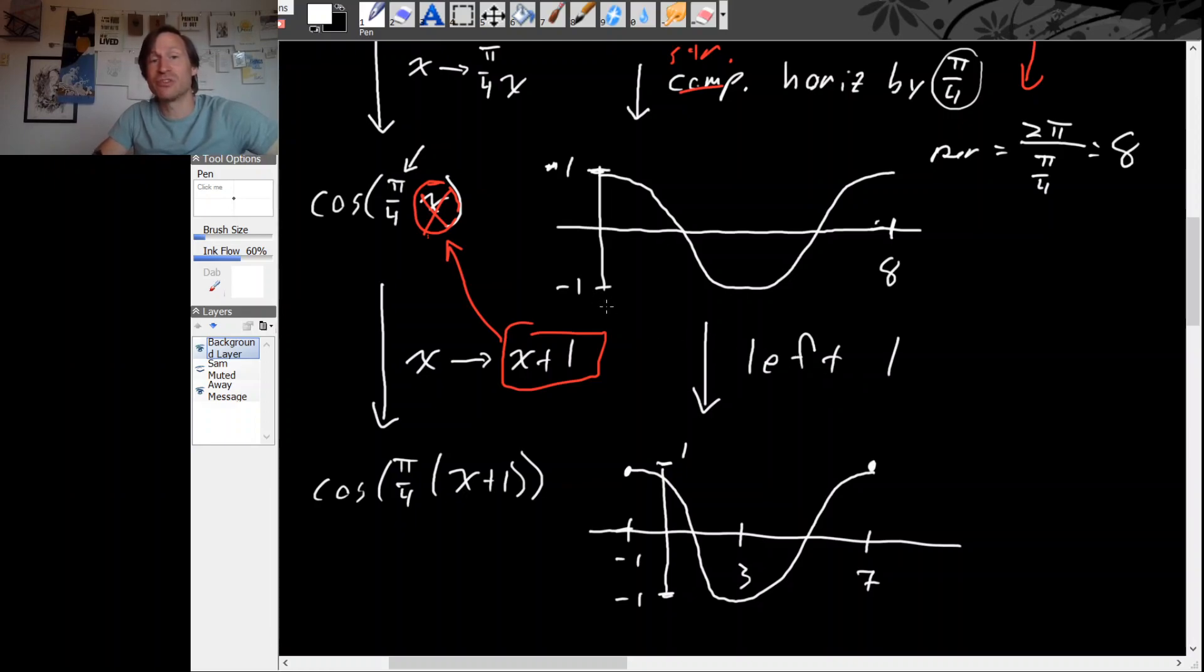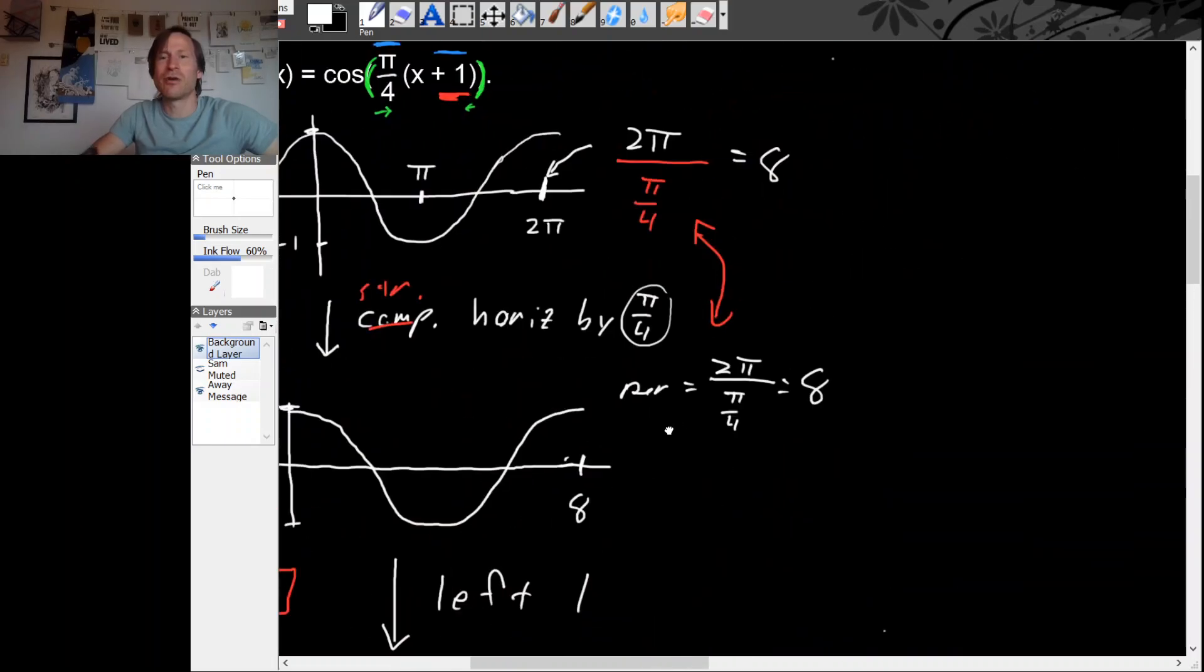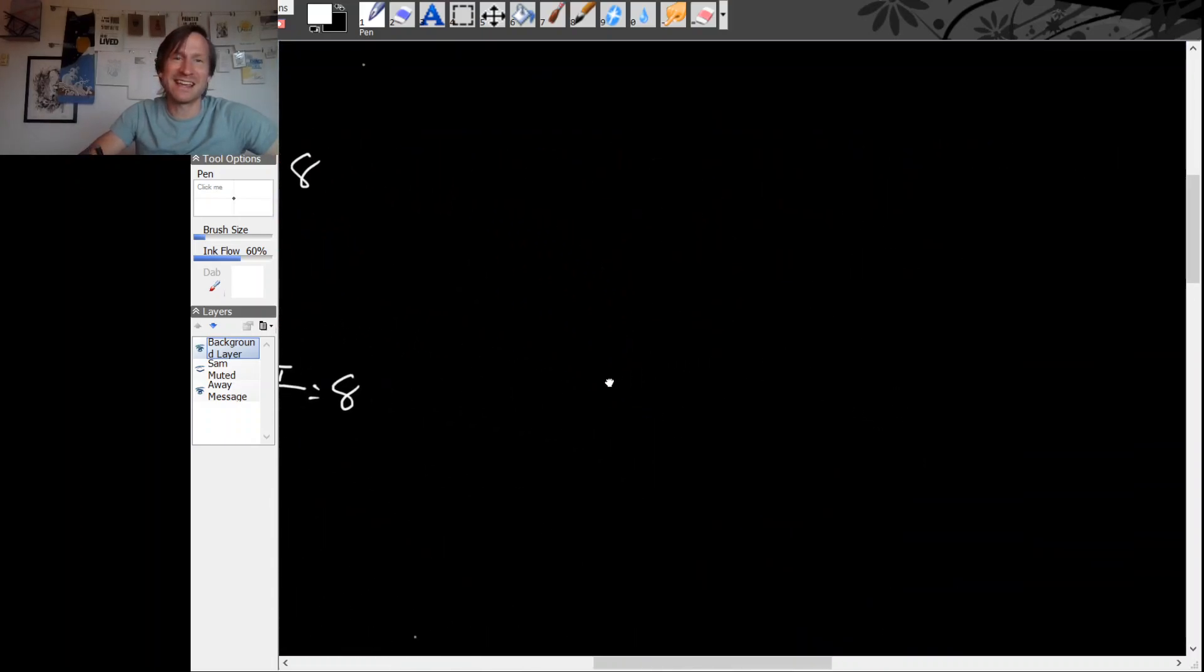And the important part here was how we were being careful about the order of operations and about these parentheses right here. So now let's see the wrong way to do it, the mistake that people often make. So again, we're sketching a graph of cosine of pi over 4 times x plus 1.